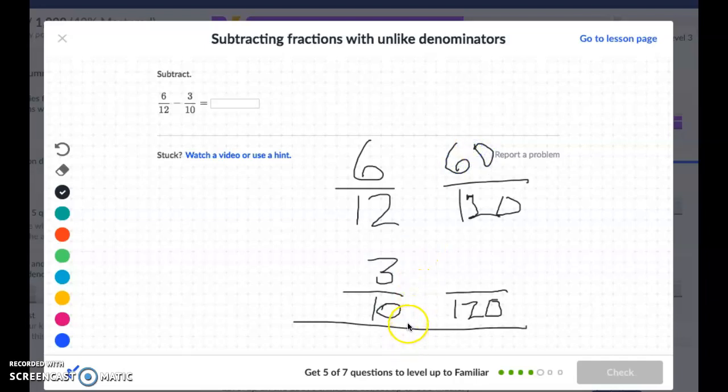And then 10 times 12 is 120, and 3 times 12 is 36. So then I'm going to do my subtraction. So if I do 60 take away 36, that's going to be 24, and then I just keep my denominator 120.